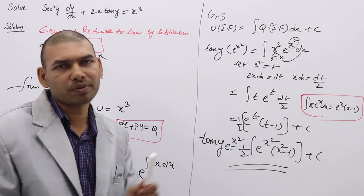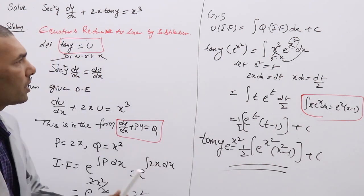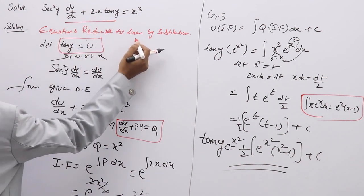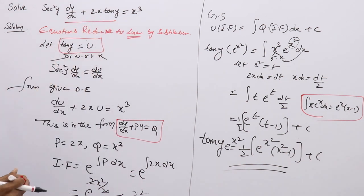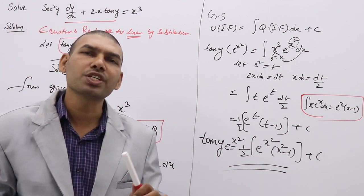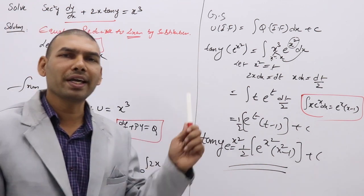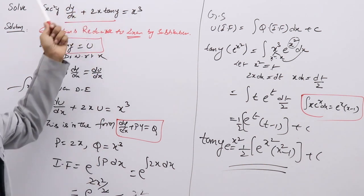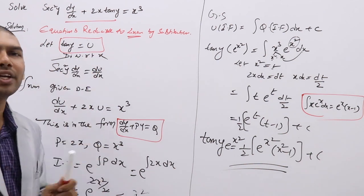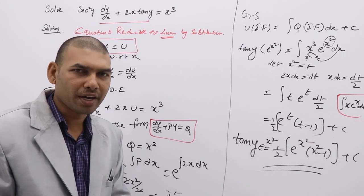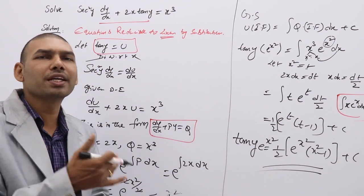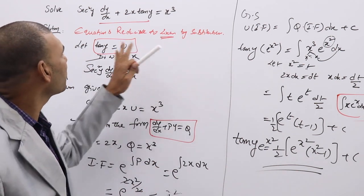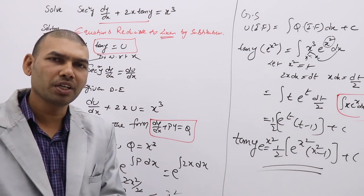So, like this, one can easily reduce this type of DE to linear by substitution. But you need to identify which term you need to take as u. By taking u, the given differential equation should become linear. You are reducing a nonlinear differential equation to linear by substitution, by assuming one term as u.